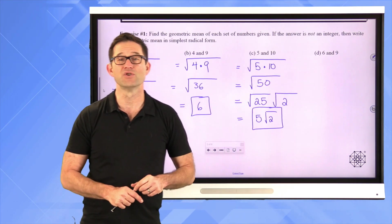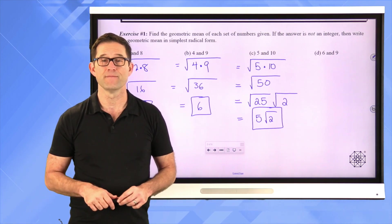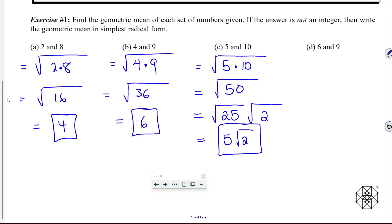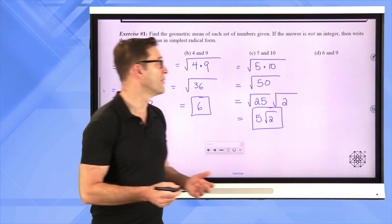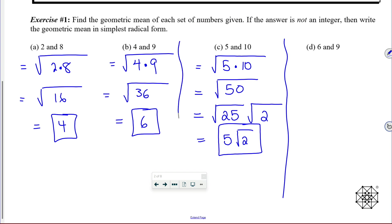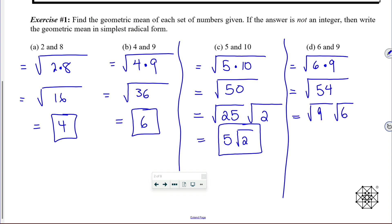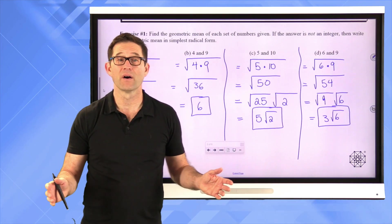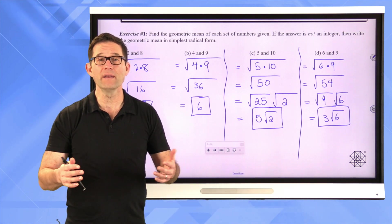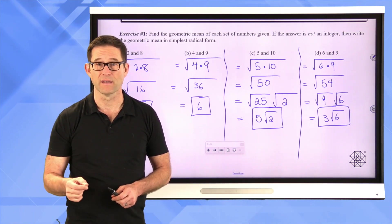Now find the geometric mean of 6 and 9. The geometric mean of 6 and 9 is the square root of 6 times 9, which is the square root of 54. Simplifying, that's the square root of 9 times the square root of 6, which is 3√6. So actually finding a geometric mean is very, very easy. Let's talk now about what it's really finding for us.